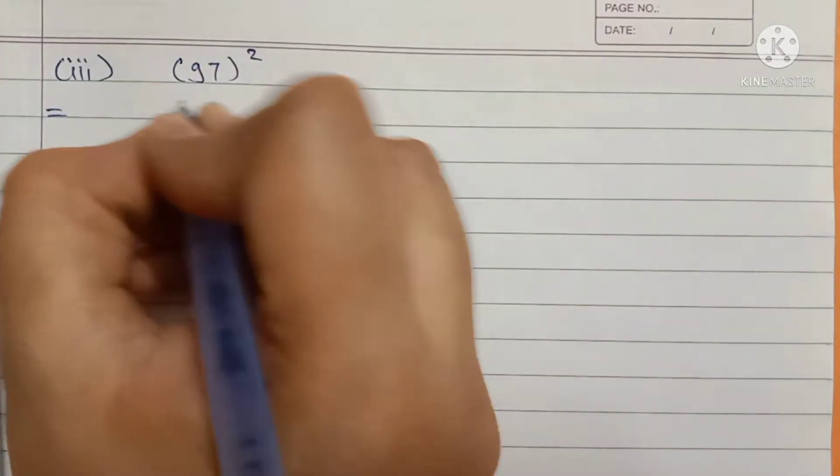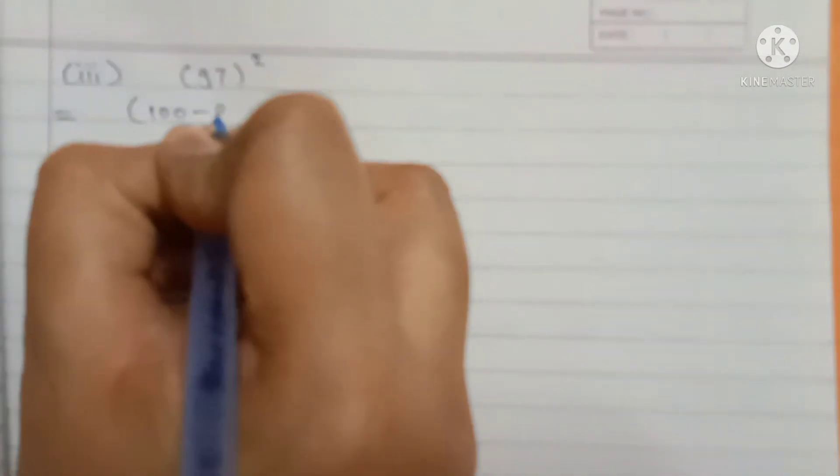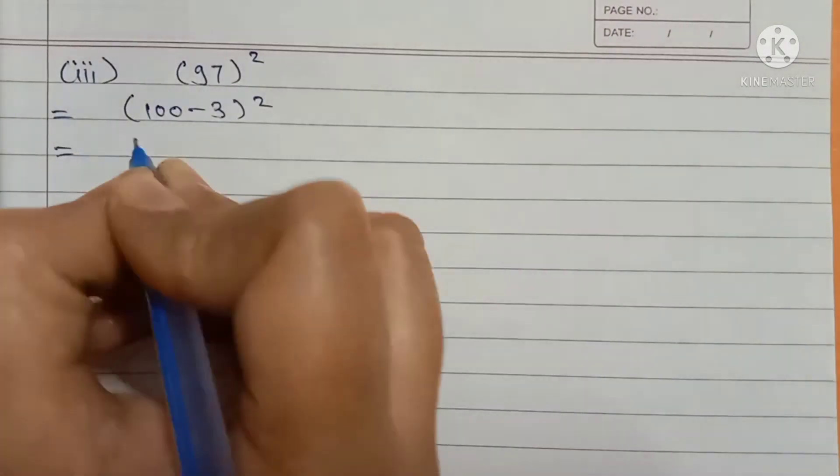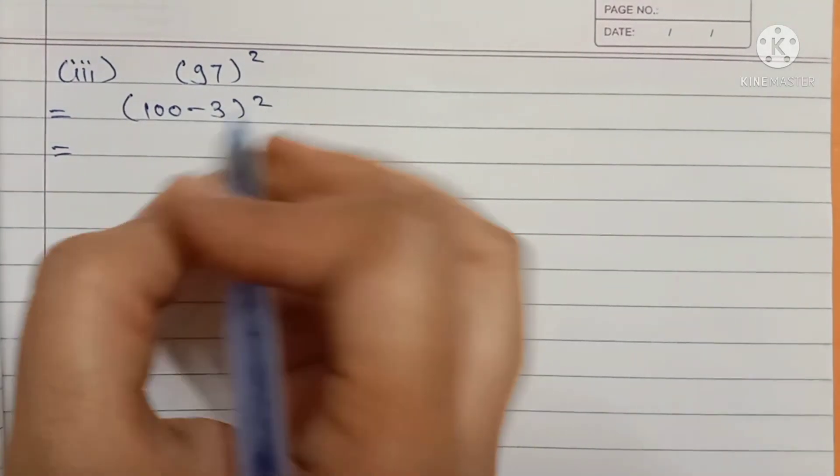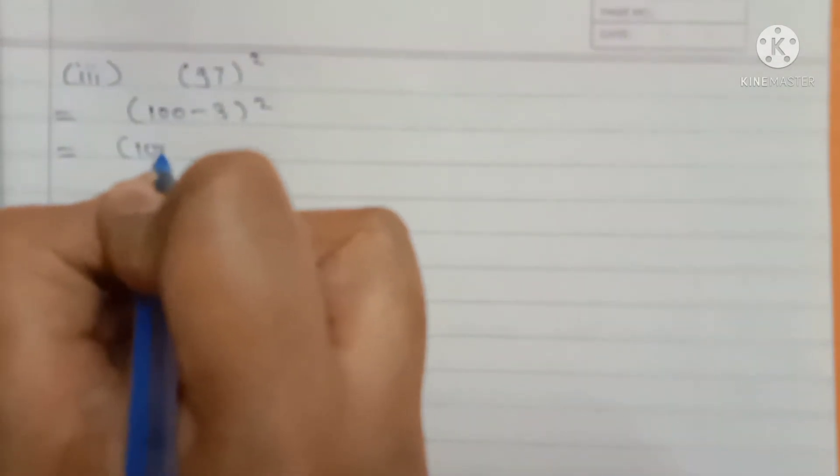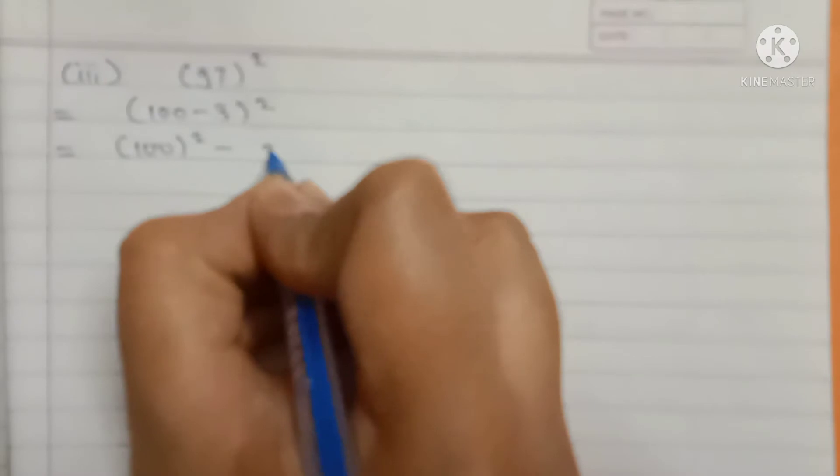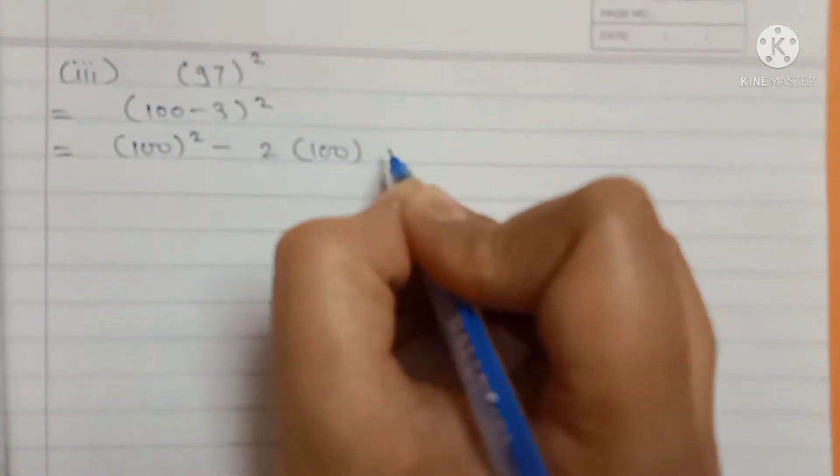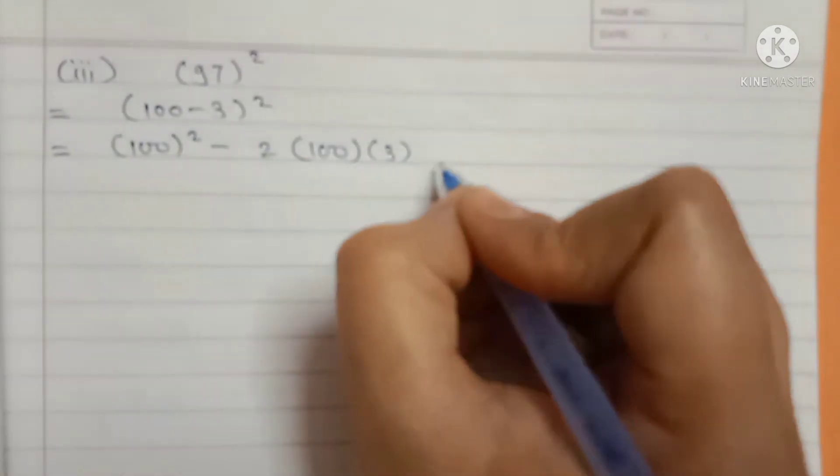Third is 97 squared. How to write 97? 100 minus 3 bracket square. Again A minus B bracket square formula. A² means 100² minus 2AB means 2 into 100 into 3 plus B².